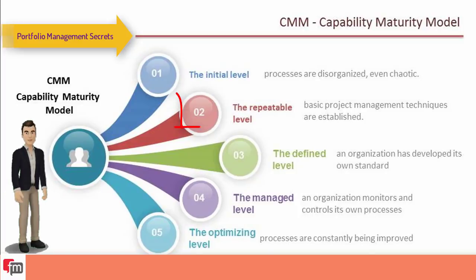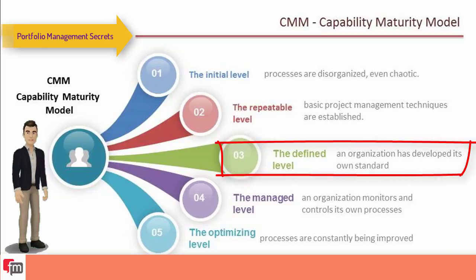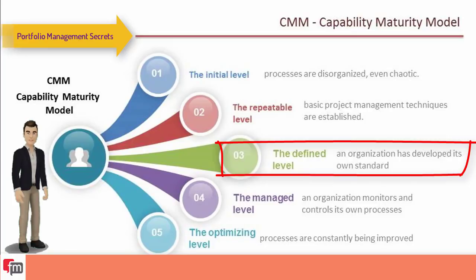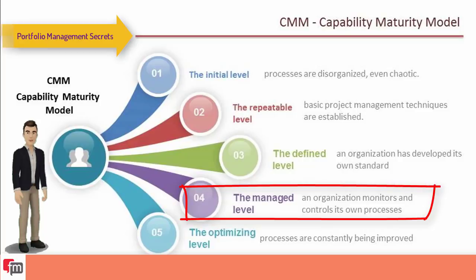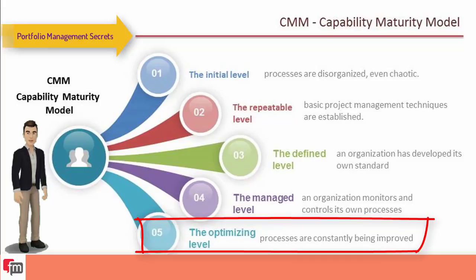Level three is the defined level, where an organization develops its own standard processes through greater attention to documentation, standardization, and integration. Level four is the managed level, where an organization monitors and controls its own processes through data collection and analysis. Level five is the optimizing level, where processes are constantly improved through monitoring feedback from current processes and introducing innovative processes to better serve the organization's needs.